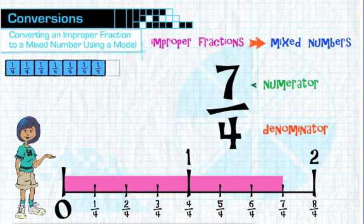Since the numerator is clearly larger than the denominator, we can write seven-fourths as an improper fraction, and we know that it has a value greater than one.